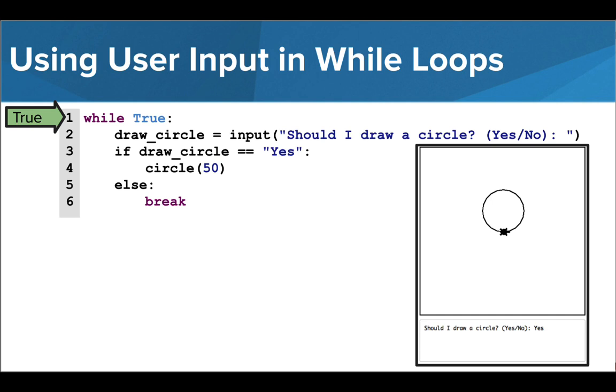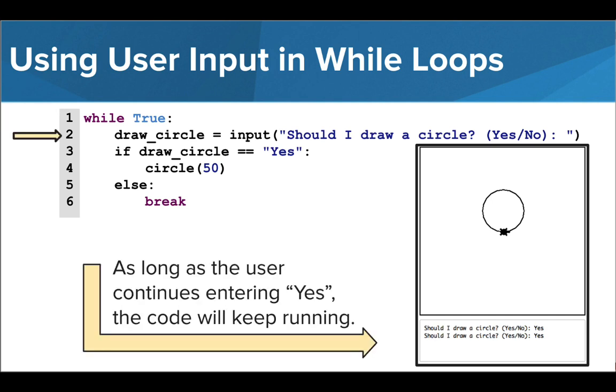Then we'll skip the else statement and return back to the while condition, which is still true, and we will ask them for input again. This will continue as long as the user continues to enter yes. If they say anything other than yes, we will reach the break statement and we'll exit the while loop.